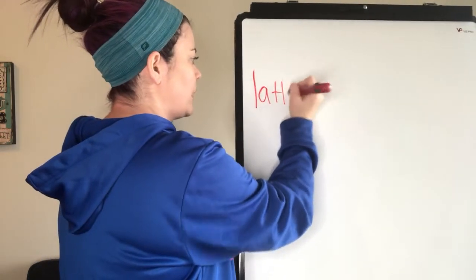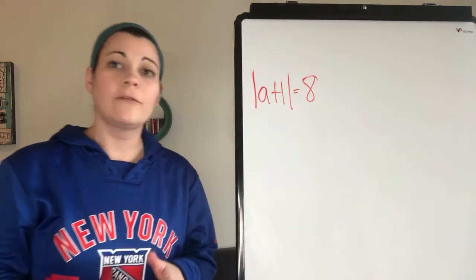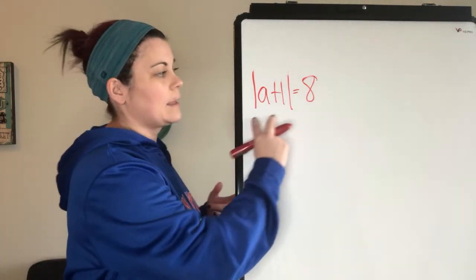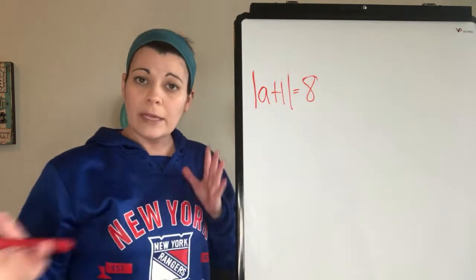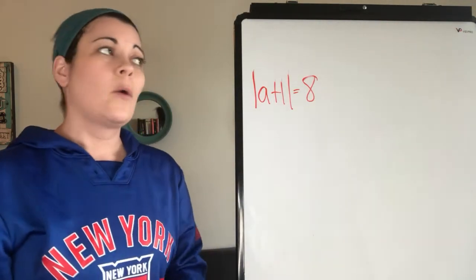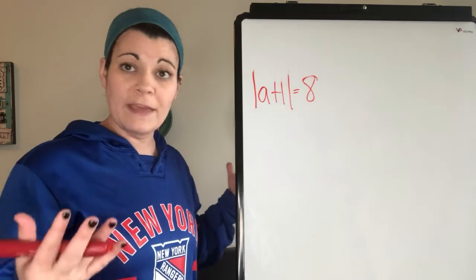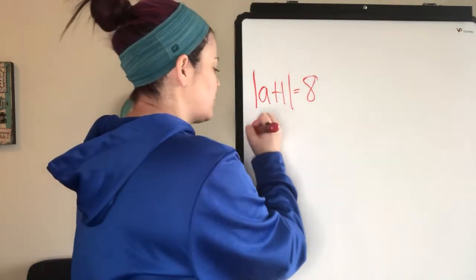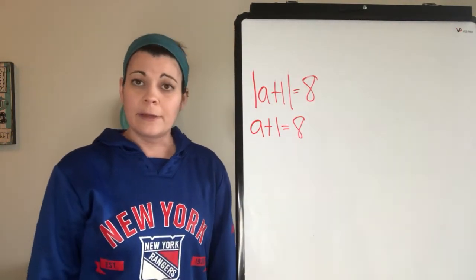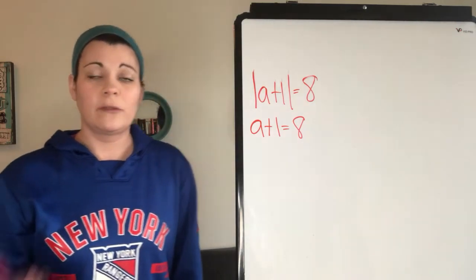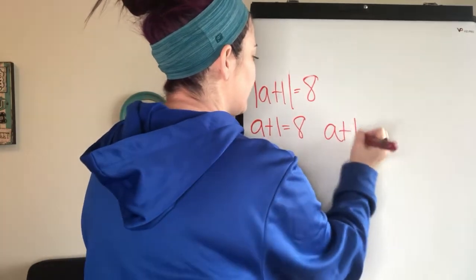So to solve an absolute value problem, if we have |a + 1| = 8, the first thing you want to do is isolate the absolute value. In this case, the absolute value is already isolated — it's the only thing on the left side — so we can skip that step. We go on to the next step, where you split this into two equations. The first one is simple: just drop the absolute value bars and rewrite it. So a + 1 = 8.